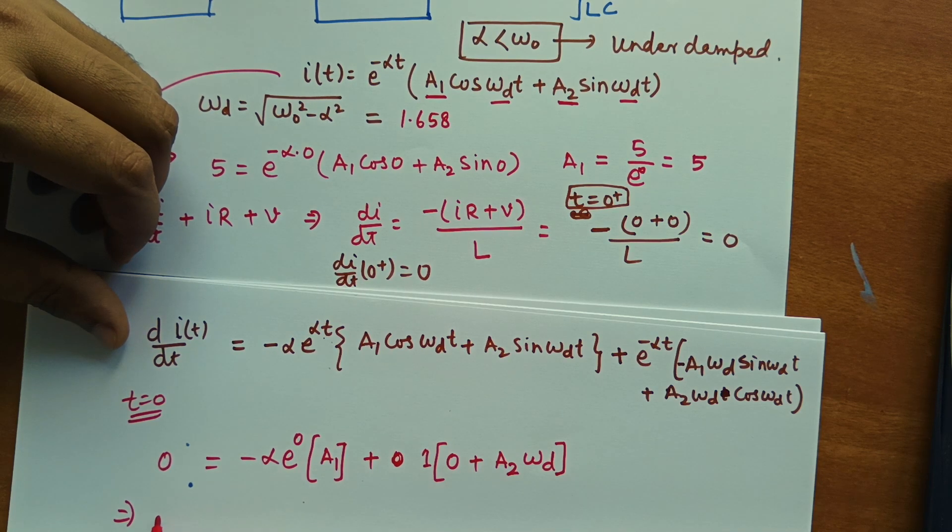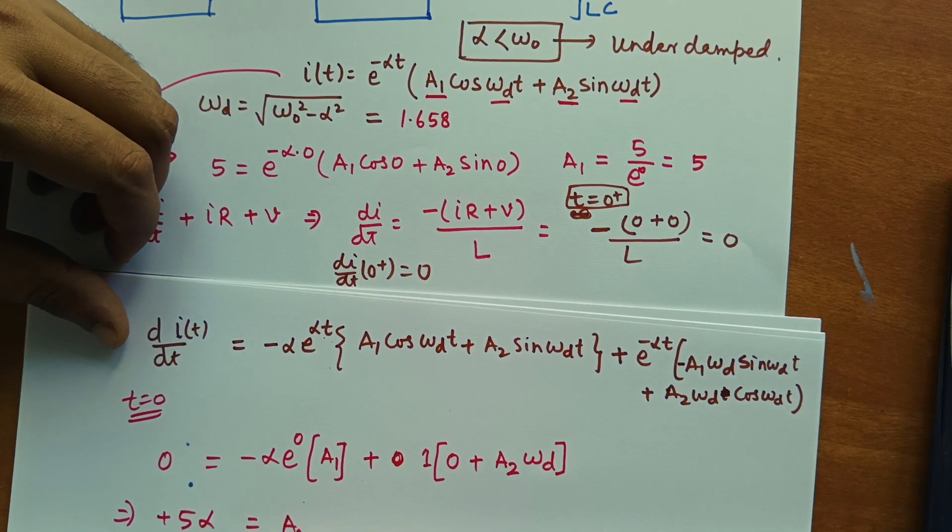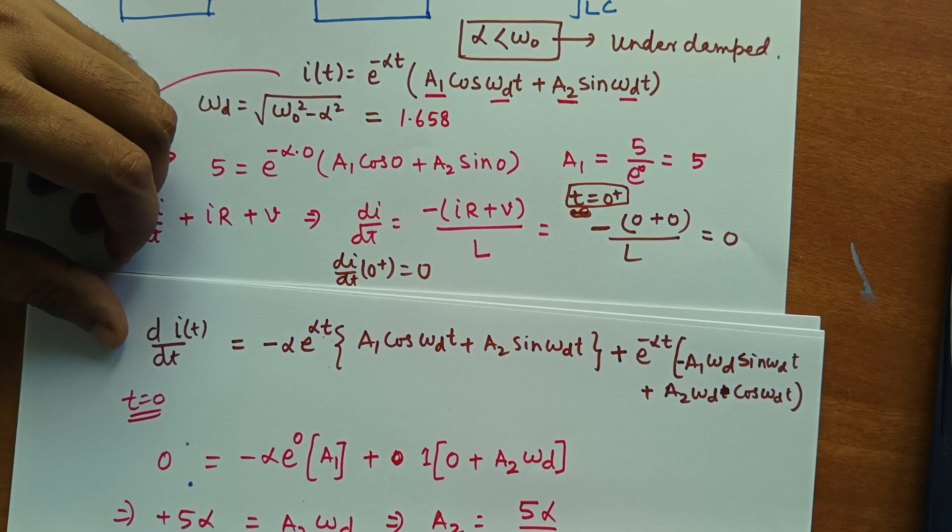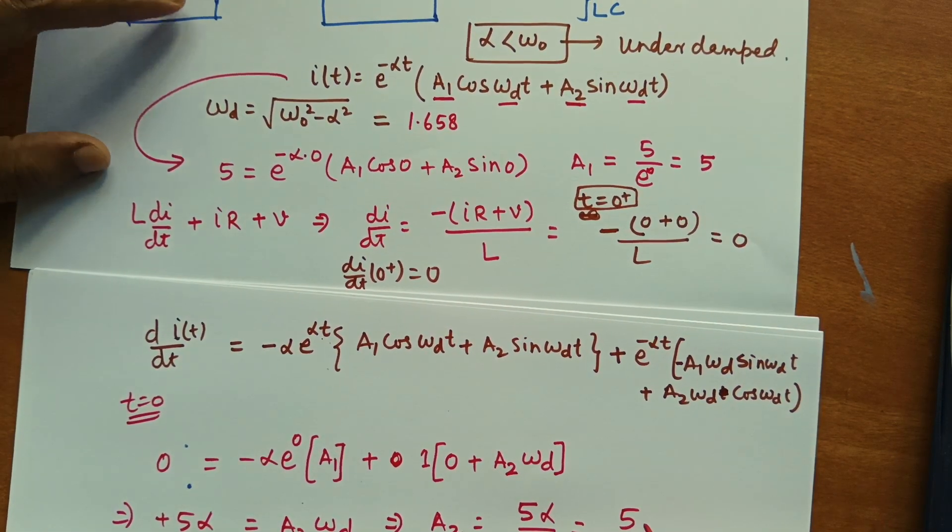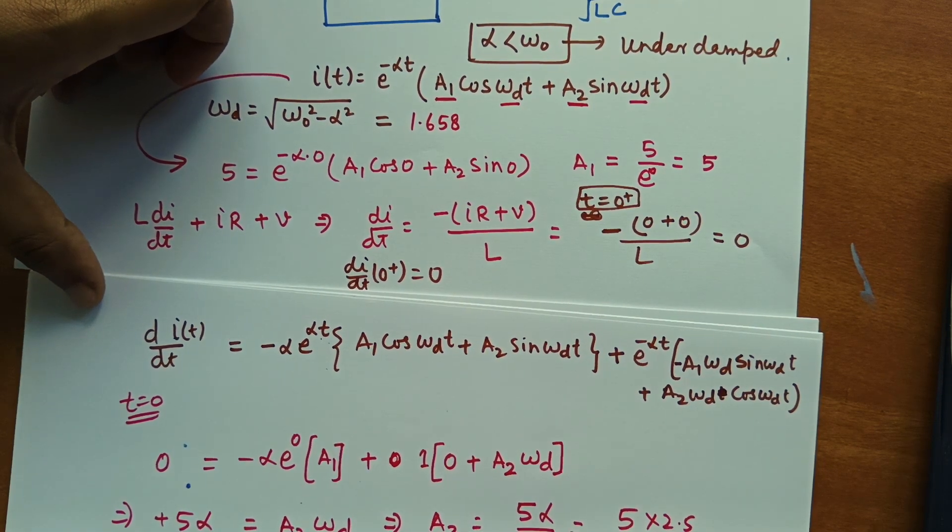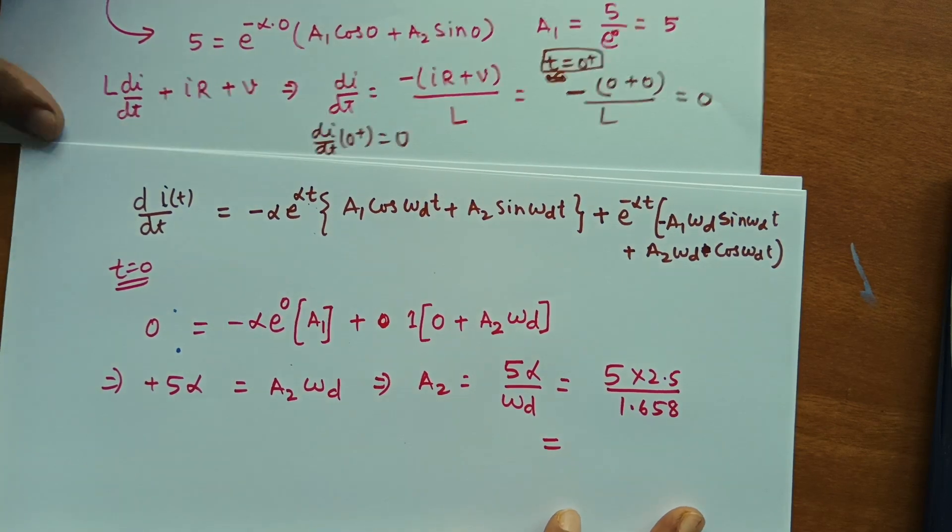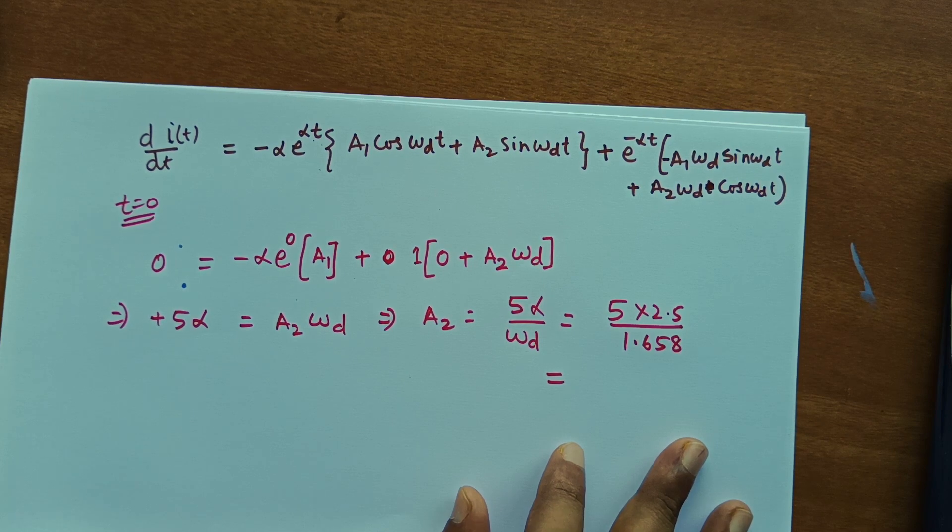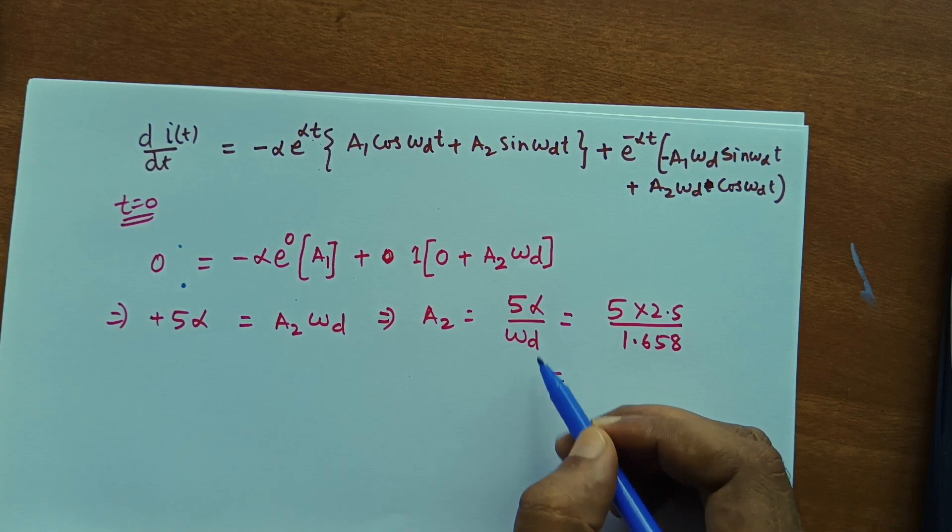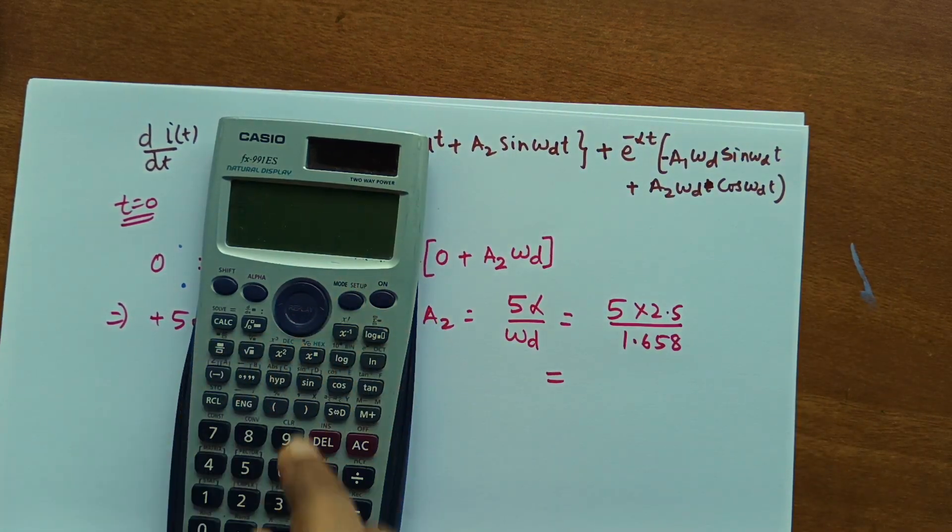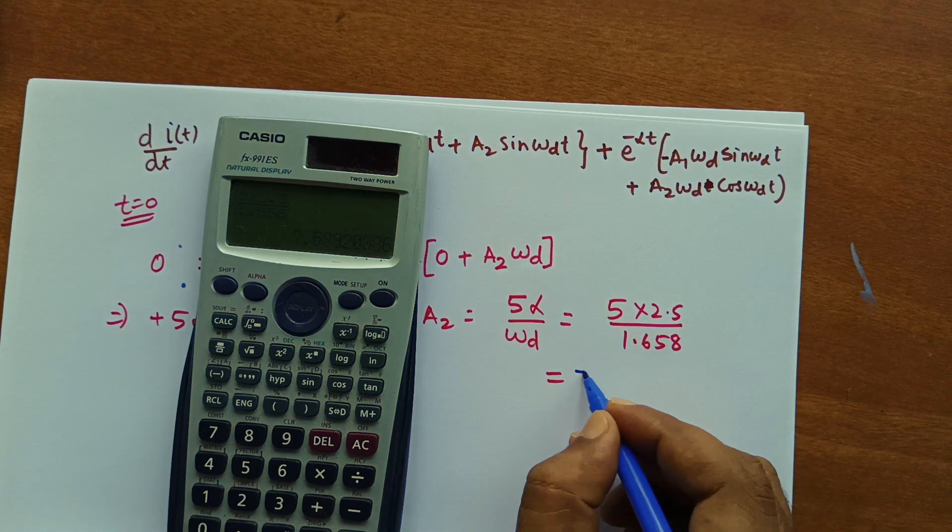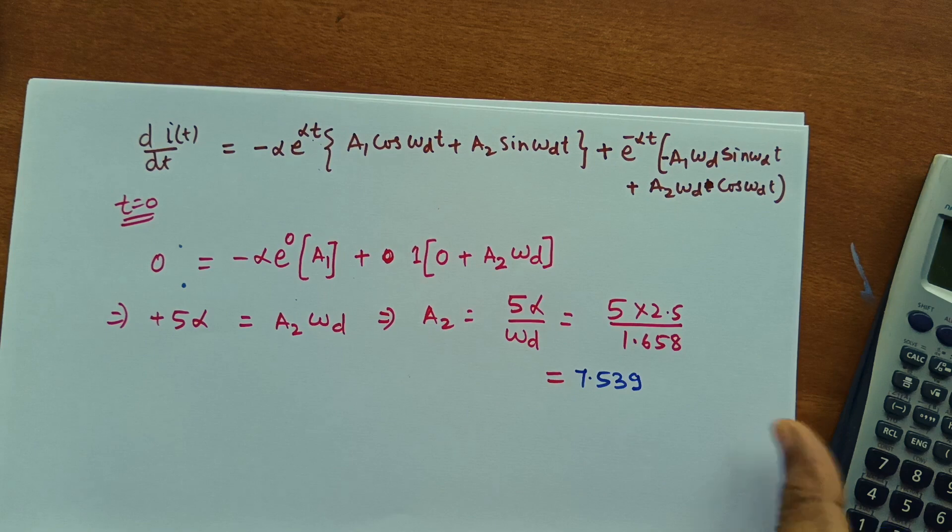A1 is 5. So this we can bring this side. So it will become plus 5 alpha equal to this will be a2 omega d. So a2 is 5 alpha by omega d. So we have calculated already. Alpha equal to 2.5 and omega d equal to 1.658 which can be equal to. So we have calculated a2 equal to 5 alpha by omega d which is equal to 5 into 2.5 by 1.658 by putting the alpha and omega d value. Let's see how much is the value. This is 7.539.